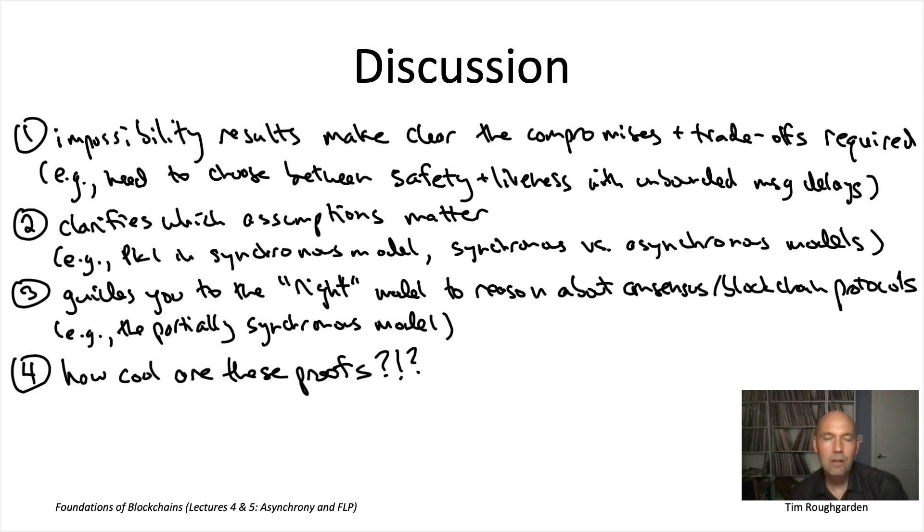That wraps up our discussion of the asynchronous model and the FLP impossibility result. I'll see you in lecture six for discussion of the partially synchronous model and the Tendermint protocol.